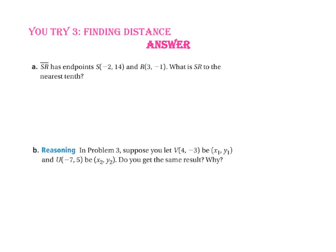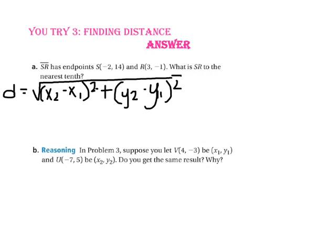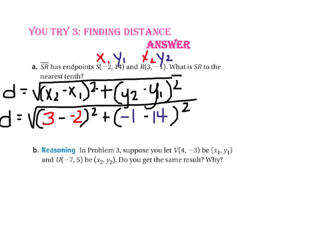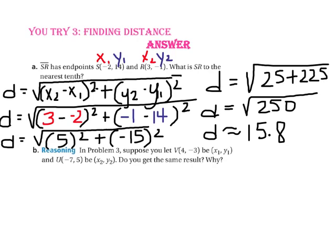Pause the video and do U-Try number 3. For part A, segment SR has endpoints S at (negative 2, 14) and R at (3, negative 1). What is the length of segment SR to the nearest tenth? Start by writing the distance formula, identify x₁, y₁ and x₂, y₂, then substitute these values into the distance formula and simplify to find the value of d. Rounded to the nearest tenth, the length of segment SR is 15.8.